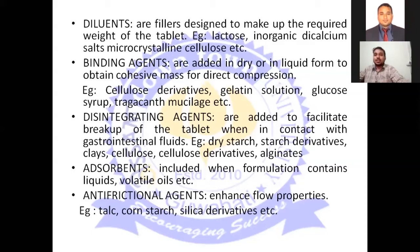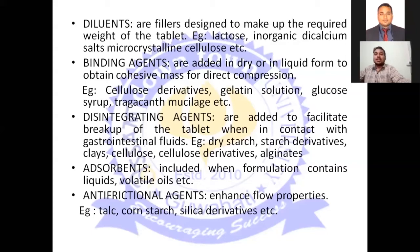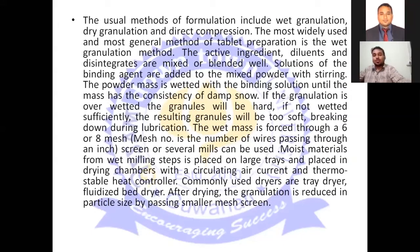Examples of disintegrating agents include dry starch, starch derivatives, clays, cellulose, cellulose derivatives, and alginates. Absorbents are required when the formulation contains liquid and volatile components, as in the wet granulation technique. Anti-frictional agents enhance the flow properties of granules. During compression, the flow of granules from the hopper to the die requires anti-frictional agents. Examples include corn starch, colloidal silica, and magnesium stearate, which also acts as a lubricant.